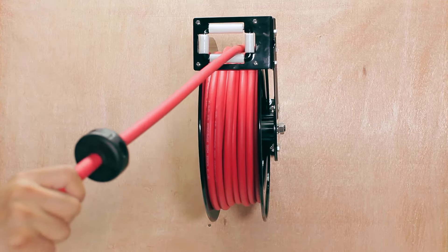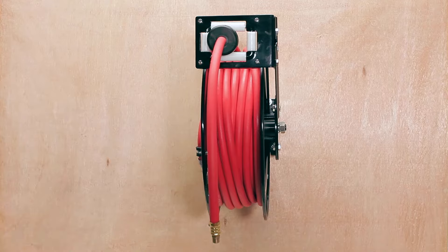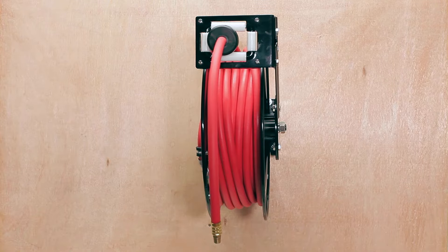To unlatch the reel, slowly pull out the hose about one foot, then let the hose retract until the hose stopper rests against the hose guide opening.